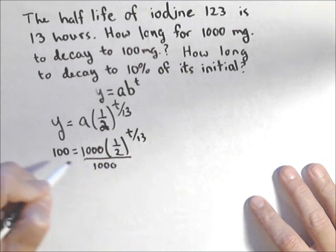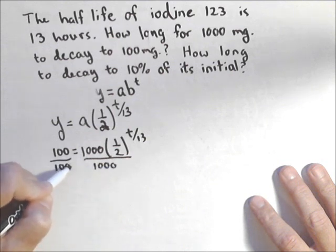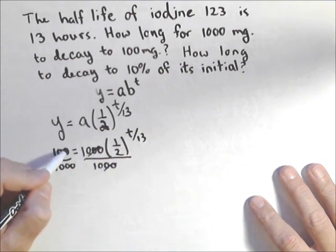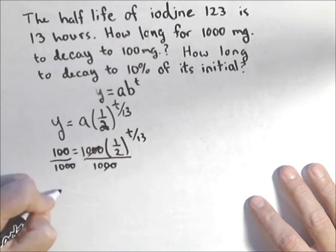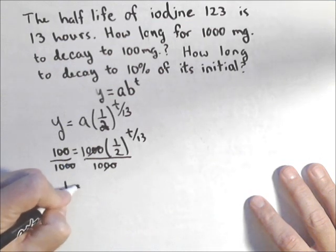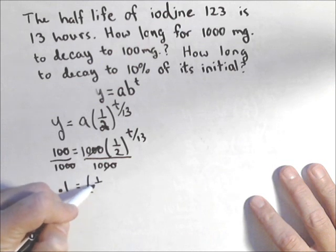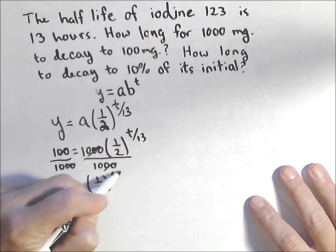First step, divide both sides by 1,000. And over here, cancel out a couple zeros, I get one-tenth or 0.1. So I have 0.1 equals 1 half to the T over 13.